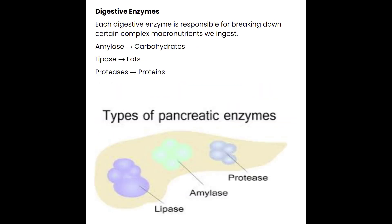The acinar cells in the pancreas are responsible for making these digestive enzymes, storing them, and what's interesting is that technically the body is made of the macronutrients these enzymes are responsible for breaking down. So what the acinar cells do is store these enzymes as zymogens — inactive enzymes until they become activated in the small intestine. They hang out safely in the pancreas, and once released into the duodenum, they're activated and can break down the food we eat. It's a self-protective system so we don't digest ourselves.